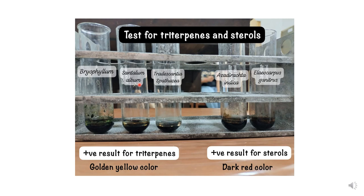For the triterpene test, a golden yellow color in the chloroform layer is the positive result. The first tube, Bryophyllum, shows a light yellow color — positive. The second tube, Santalum album (chandan/sandalwood), shows a yellow color in the chloroform layer — also positive. The third tube shows a golden yellow color layer — also positive for triterpenes.